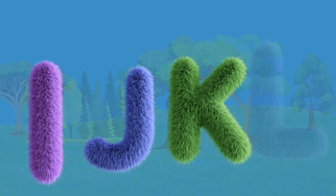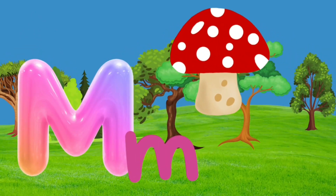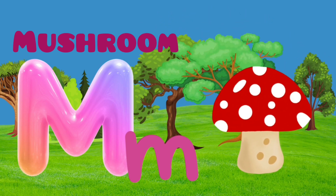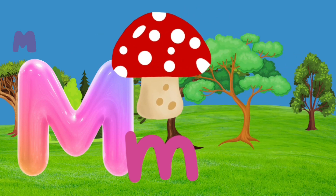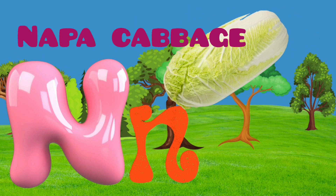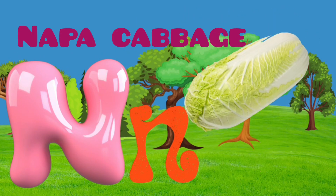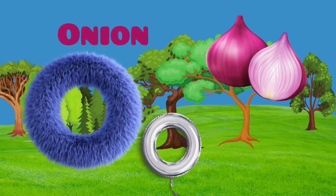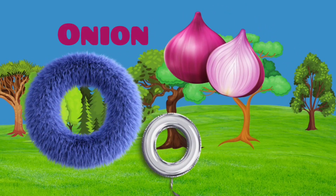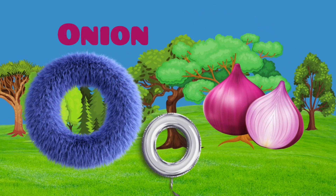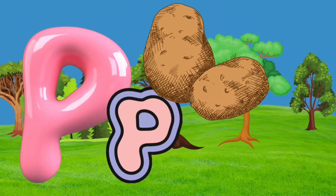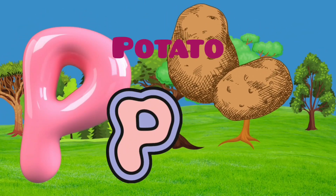M is for mushroom, mushroom. N is for napa cabbage, napa cabbage. O is for onion, onion. P is for potato, potato.